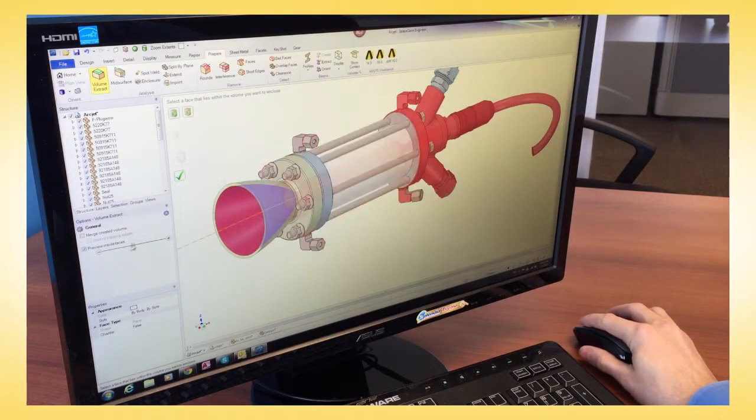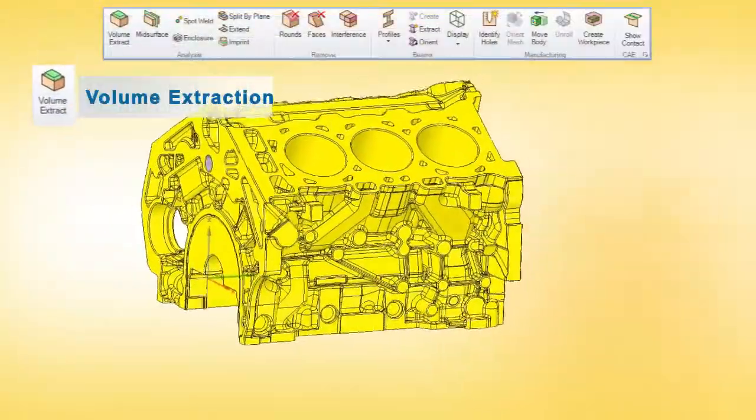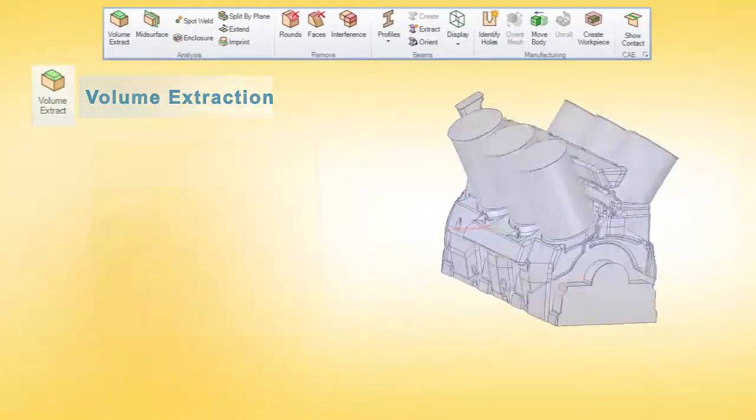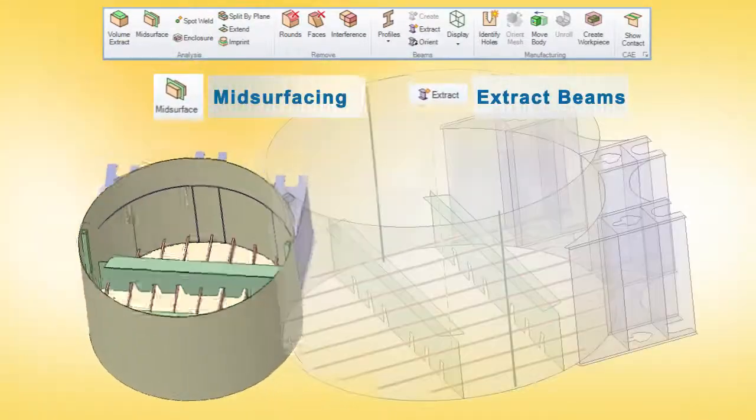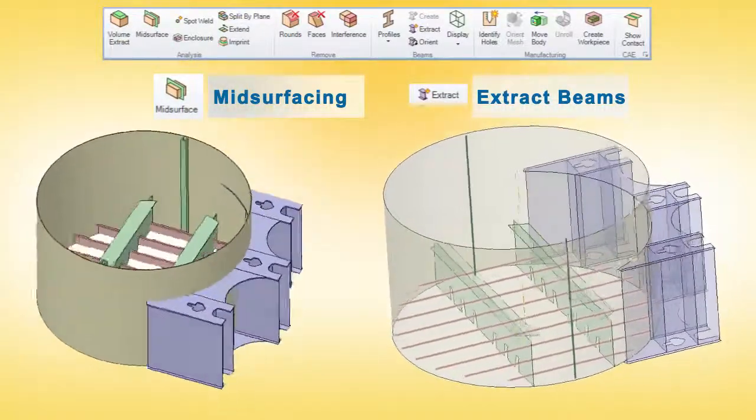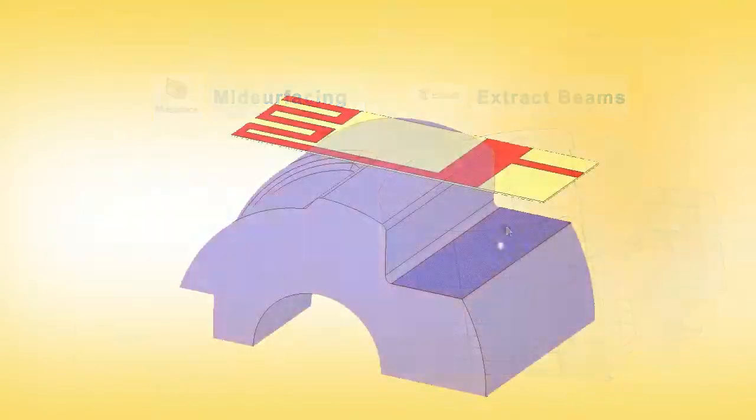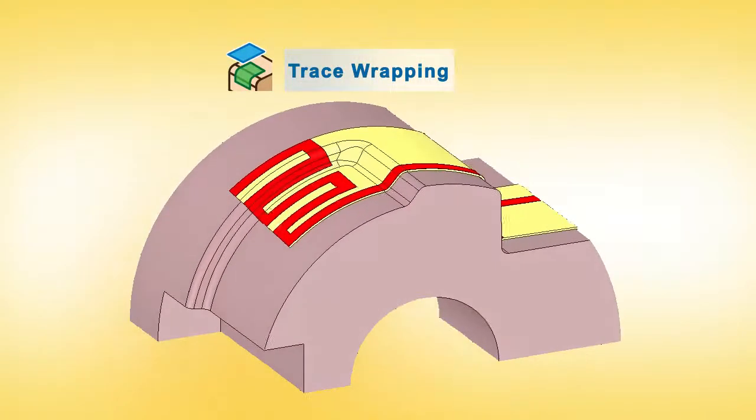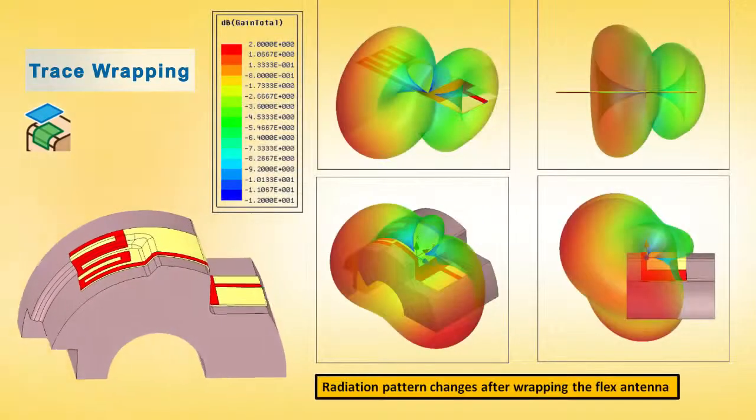SpaceClaim even provides physics-specific tools for structural, fluids, and electronics. There's no waiting for a pre-processor that extracts a volume with just a few button clicks, or identifies and extracts all mid-surfaces and line elements from structural assemblies. Even accurately wrapping circuits on substrates within electronics assemblies is now a reality.